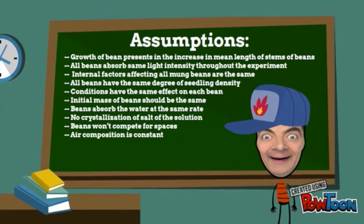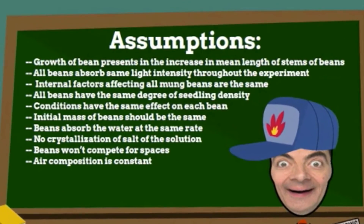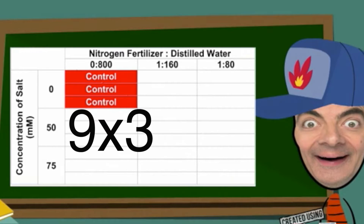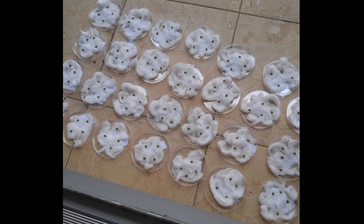Over here, I am listing out all the assumptions of this experiment for you. We have chosen three levels for each variable, thus nine different conditions will be provided for the mung beans to grow, and each condition will be replicated in three dishes with four beans in each dish respectively. The experiment is taken at a balcony with sufficient sunlight provided during daytime and is well ventilated.